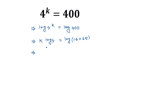So k times log of 4, where 4 can be written as 2 squared, is equal to log of 16 times 25. We can write 16 as 2 to the power 4, and 25 as 5 squared.